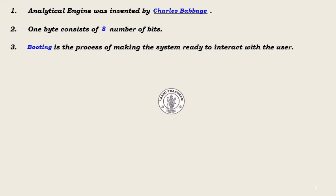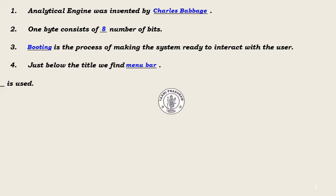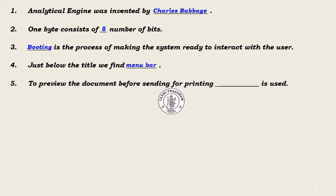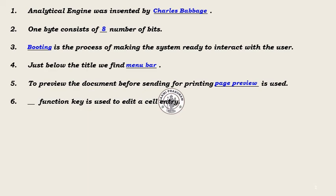Question 3: Dash is the process of making the system ready to interact with the user — Answer: Booting. Question 4: Just below the title bar we find dash — Answer: Menu bar. Question 5: To preview the document before sending for printing, dash is used — Answer: Page Preview.